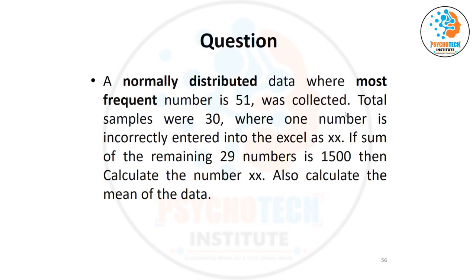So if the data is normally distributed, means what? Mean, median, mode are equal. And what is the question? Even I highlighted that also. A normally distributed data where most frequent number is 51. Most frequent number is mode. 51 is the mean, mode. So what is the mean? 51 in a second.